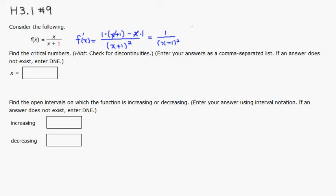You can see that since the numerator is 1, this guy is never 0. So we cannot get a critical number that way.